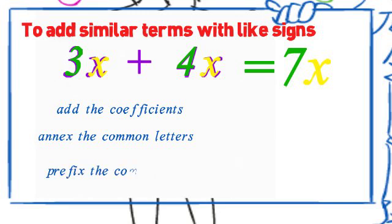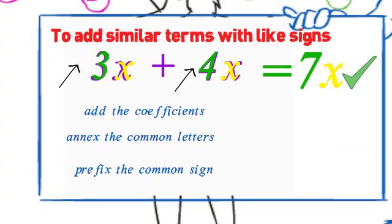Finally, prefix the common sign. Here they are both positive. We do not write a plus sign in front of a number. Our answer is therefore 7x.